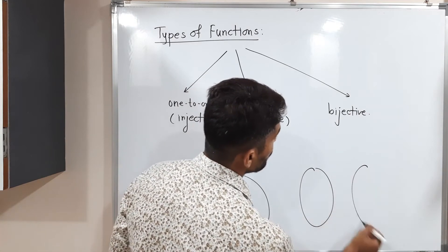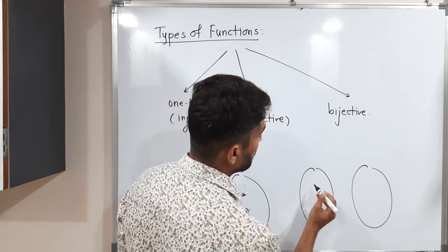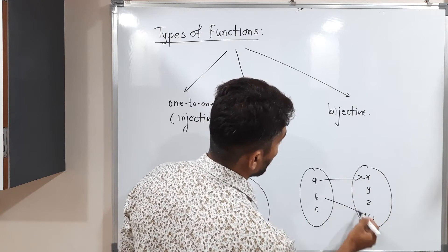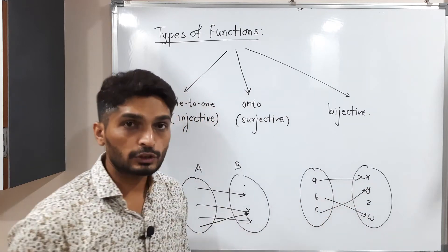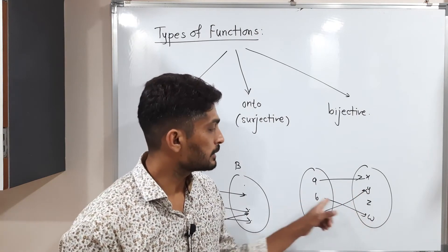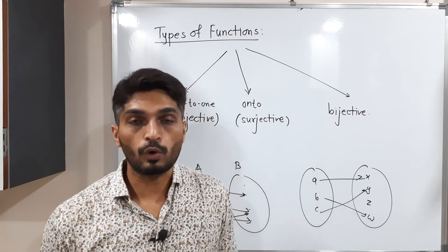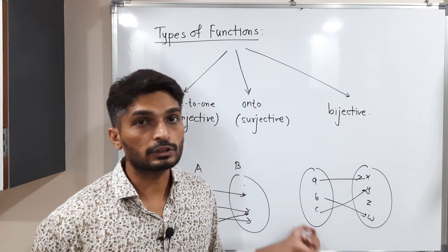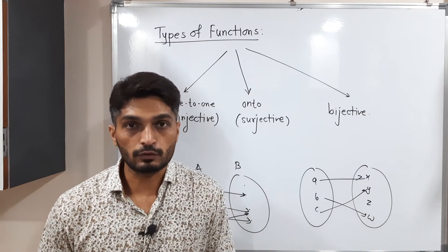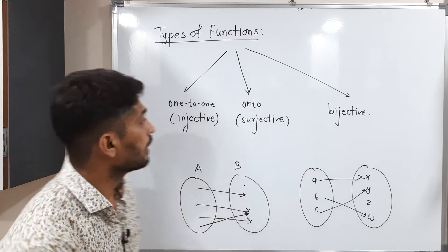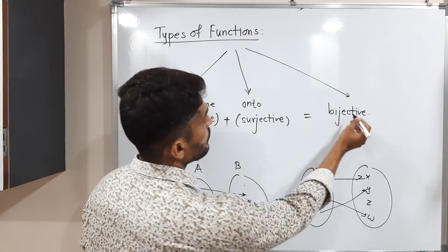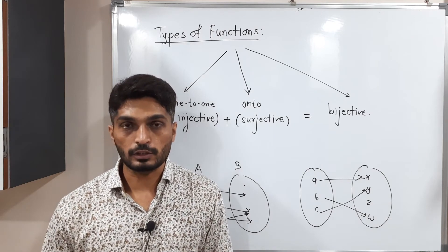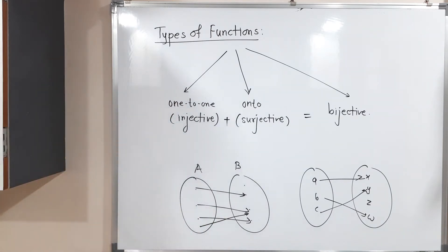Surjective means every element of the co-domain should have a pre-image in the domain. For example, if element z has no pre-image, it is not surjective. A bijective function is one that is both injective and surjective. Make a screenshot, then we will go further.